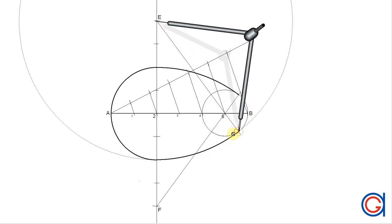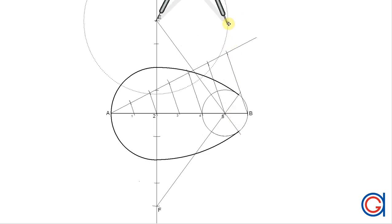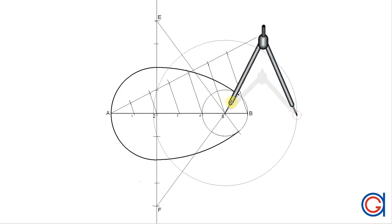Finally, to complete our ovoid, setting the compass on point five and with the radius 5B we join the two tangent points with a thicker line.